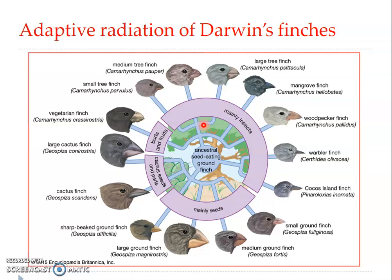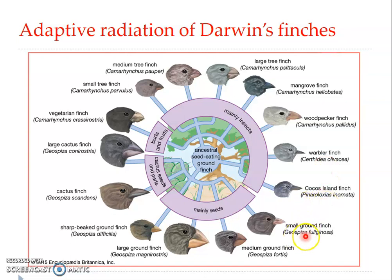These 14 species belong to four genera: Camarhynchus, Certhidea, Pinaroloxias, and Geospiza. These are the four different genera into which all 14 species can be divided.